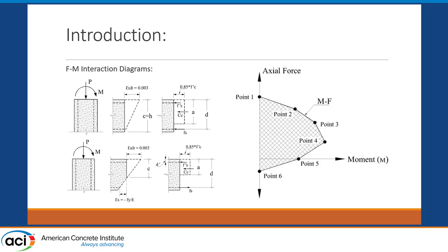As we all know, interaction diagrams — axial force bending moment diagrams — are traditionally constructed using a simplified or traditional method by assuming the ultimate concrete strain of 0.003. If unconfined, you use that strain; if confinement is considered, you use the confined stress-strain of concrete, and then you obtain coordinates of five or six points on the diagram and connect them. This is the conventional method of constructing these axial force bending moment diagrams.